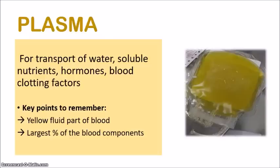The plasma also makes up the largest percentage of the blood components. Out of the four blood components, plasma makes up the largest percentage — after all, it is the fluid part of the blood, so you would expect it to be the majority. So that is plasma: the fluid part of the blood carrying lots of useful substances.